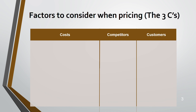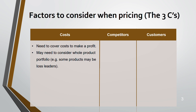Starting with the three C's — cost, competitor, and customer. When one wants to price their product, they have to look at their cost, their competitor, and their customer. Under cost, you should make sure you need to cover the cost as well as make a profit.